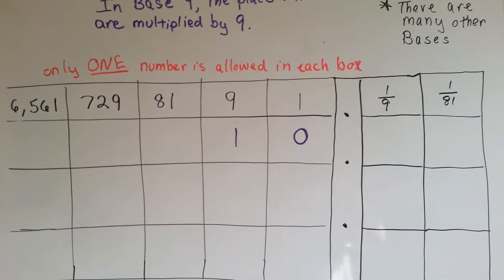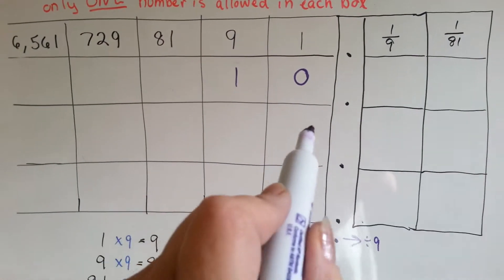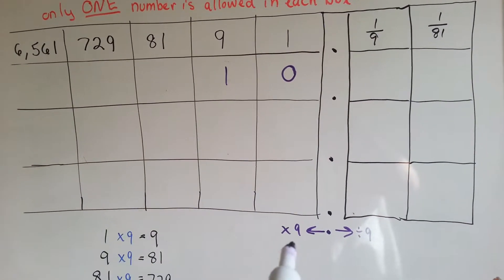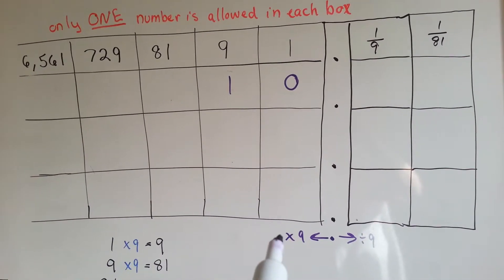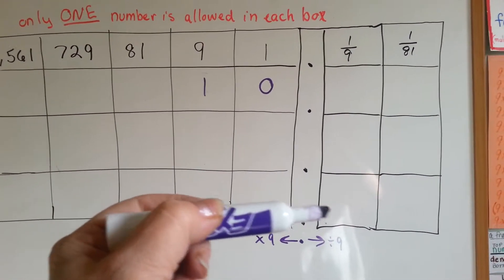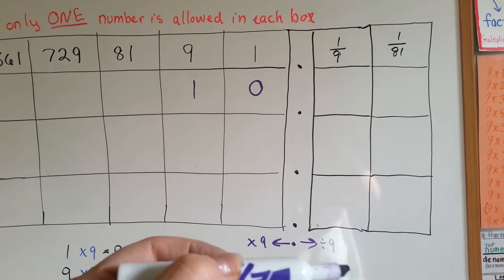You're only allowed to have one number in each box. If you look on this side, the left side of the decimal point, you're going to multiply by 9. And on the right side of the decimal point, you're going to divide by 9.